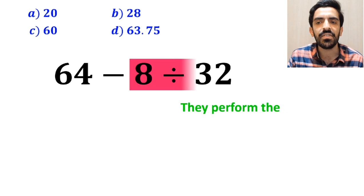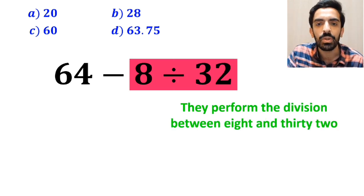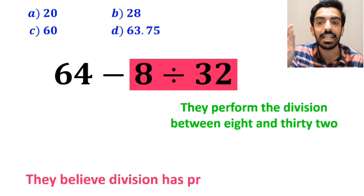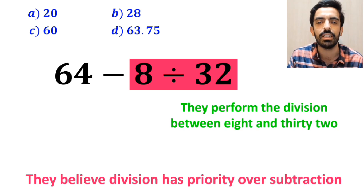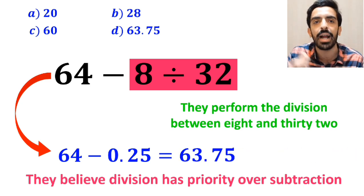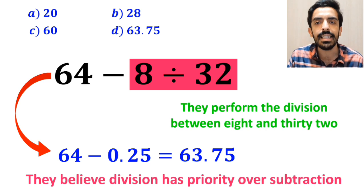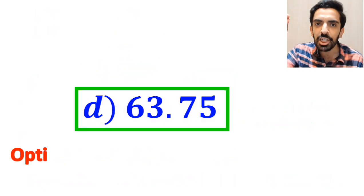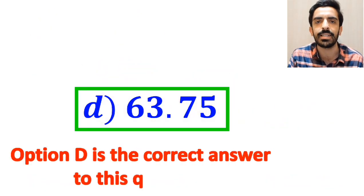Next, they perform the division between 8 and 32 since they believe division has priority over subtraction. And they rewrite this expression as 64 minus 0.25, which ultimately gives them the answer 63.75. And immediately, they conclude that option D is the correct answer to this question.